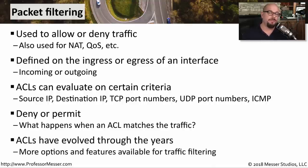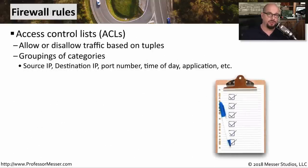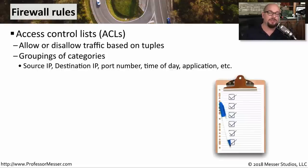Different devices and different manufacturers' equipment will provide different capabilities for access control lists, and as these devices become more intelligent, you'll find more options to define an ACL. The rule base inside of a firewall could also be considered an access control list. We're usually using multiples of different variables to determine if traffic is allowed or disallowed through the firewall — this combination of variables is called a tuple. We may combine many different tuples together to create a very specific access control rule.